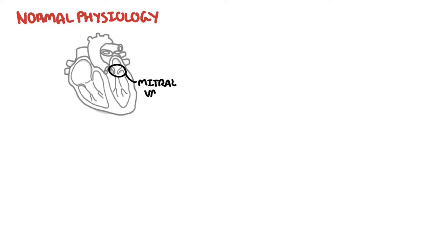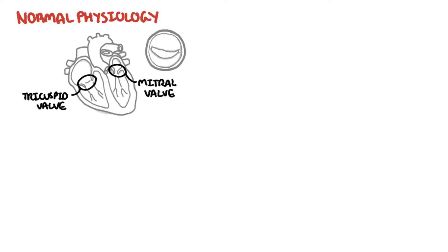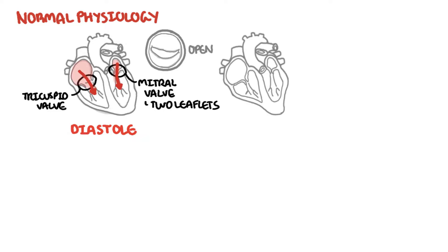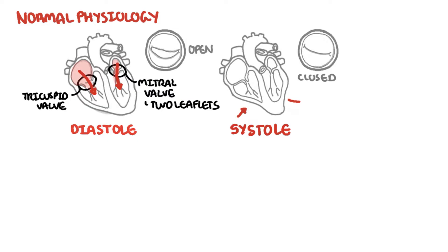The mitral valve is an atrioventricular valve separating the atria from the ventricle. The tricuspid valve is also an atrioventricular valve. The mitral valve is made up of two leaflets, and the normal area of the mitral valve is 4-6 cm². During diastole, the atrioventricular valves are open, allowing blood to flow from the atria into the ventricles. During ventricular systole, when the heart actually pumps, the mitral valve closes, allowing blood to be ejected into the aorta and into the rest of the body.